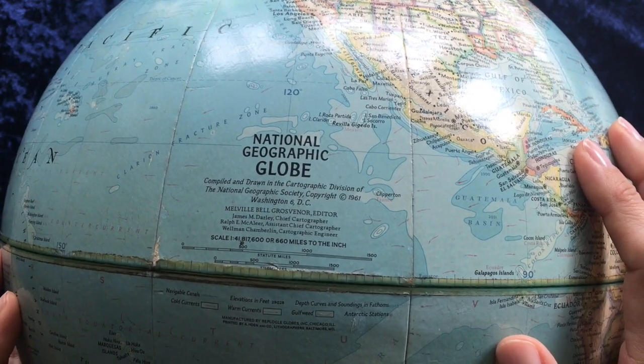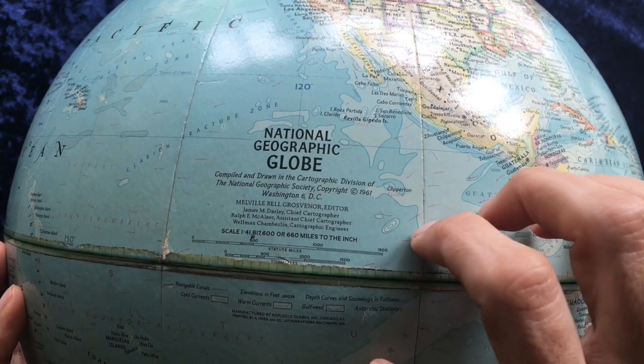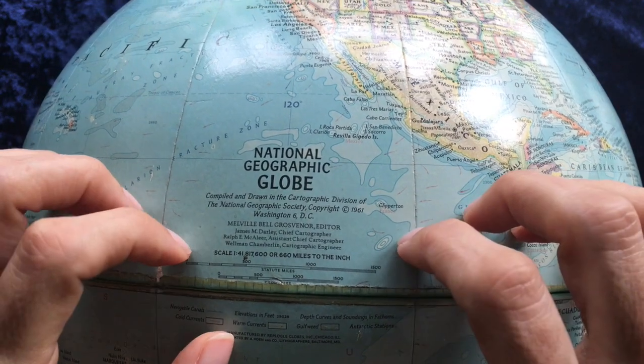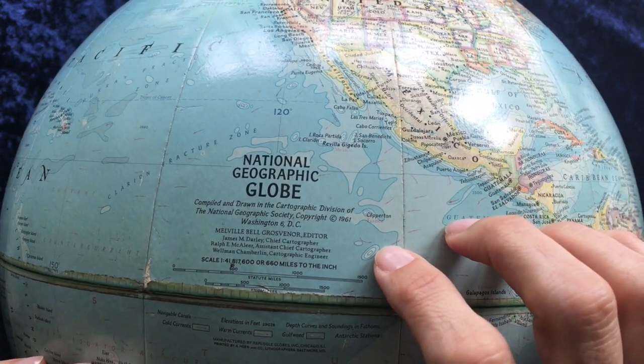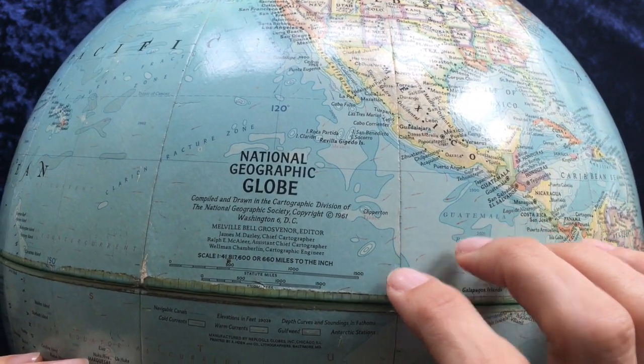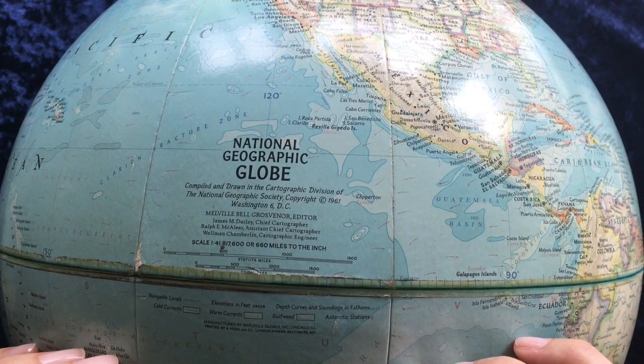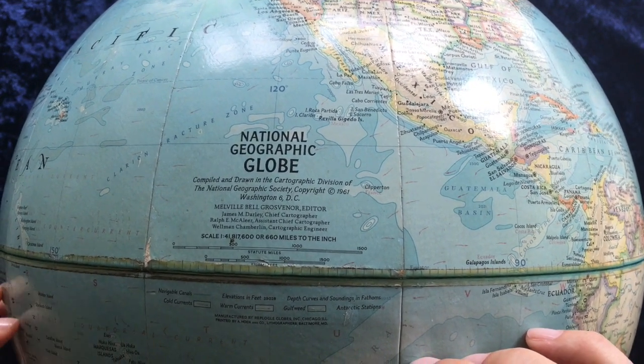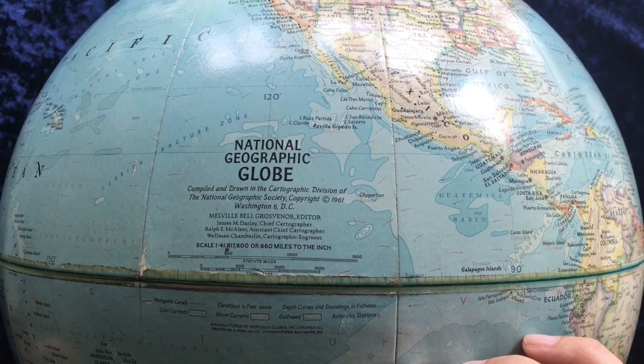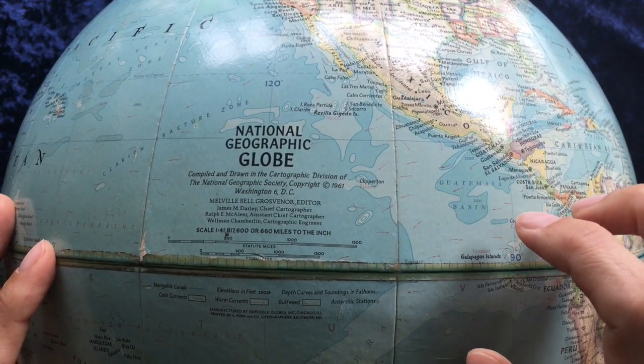Melville Bell Grosvenor, editor. James Darley, chief cartographer. Ralph McAllier, assistant chief cartographer. Wellman Chamberlain, cartographic engineer.